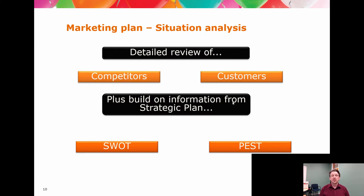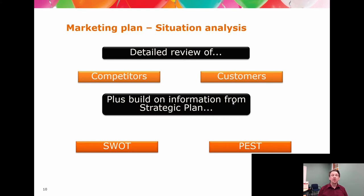The marketing plan's situation analysis is a combination of internal and external environment reviews, understanding of who your competition is and what they offer, what customers currently get from that competition, and who the customers are. It also incorporates information captured in the strategic plan, which feeds into the analysis of strengths, weaknesses, opportunities, and threats, and the environment analysis of politics, economics, socioeconomics, and technology. It's important to understand that SWOT and PEST are reports — you undertake an internal and external analysis to generate the information that you then summarize as a SWOT, rather than asking what are our strengths independently of looking at the environments.